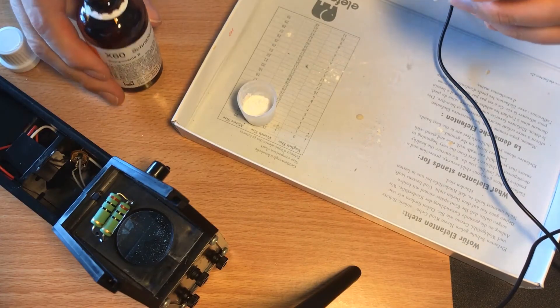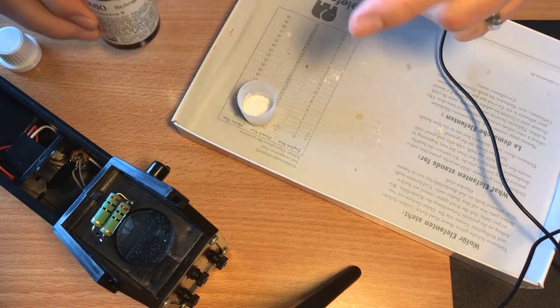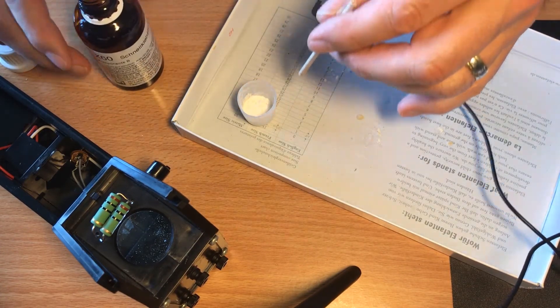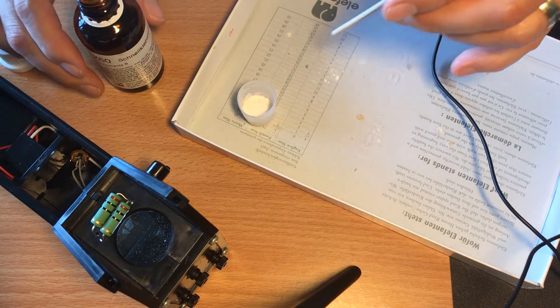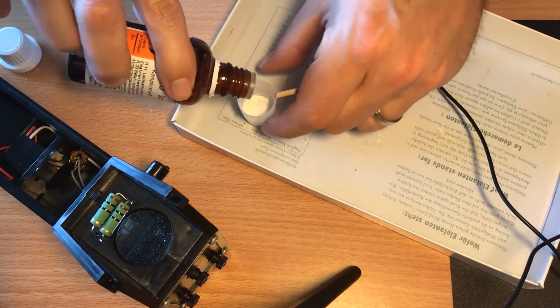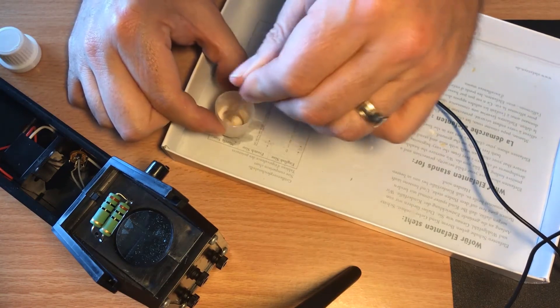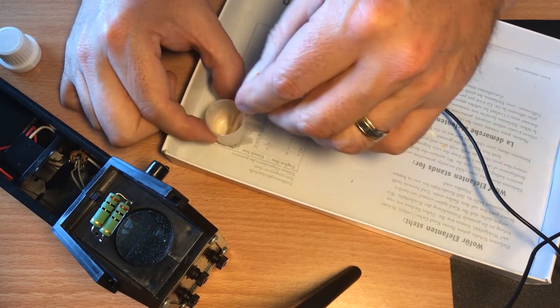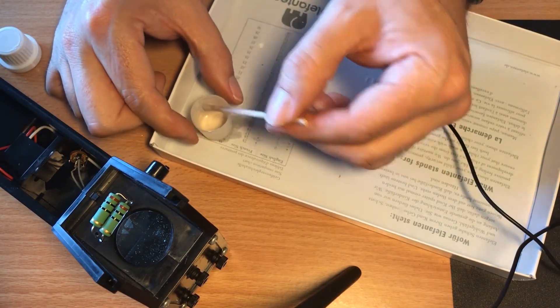Okay, so we finish off with some two-part epoxy which is great stuff. The only downside of it is it's white, so I might have to go over that with a sharpie later on.